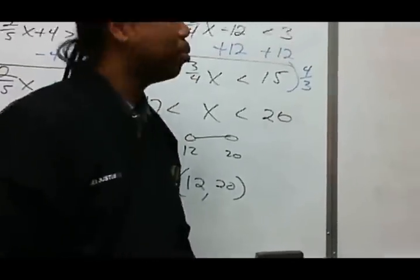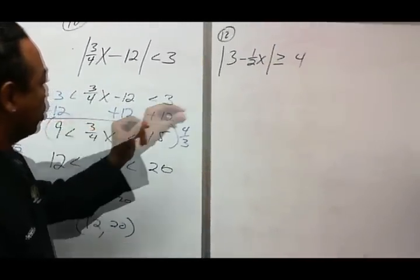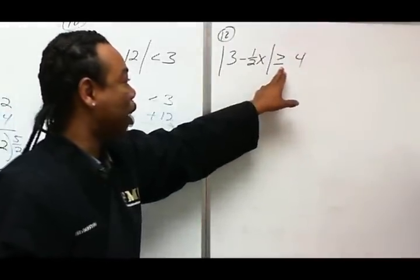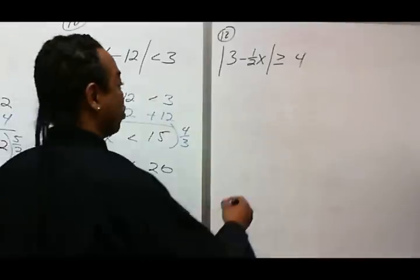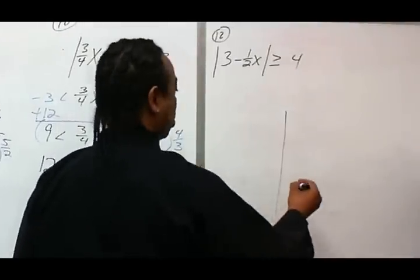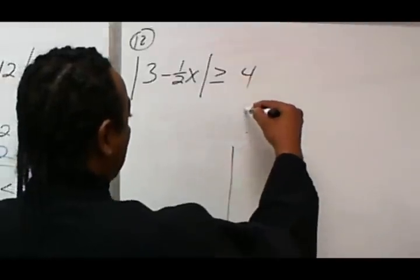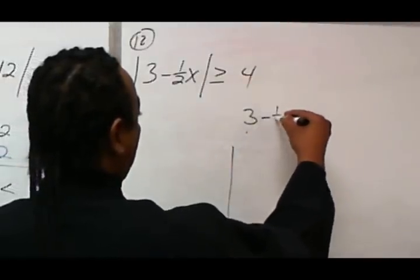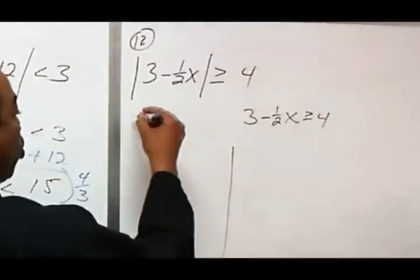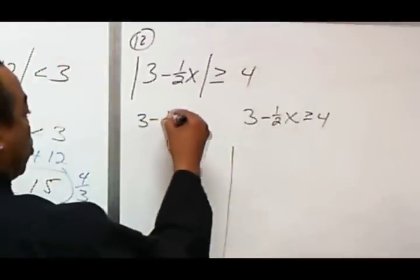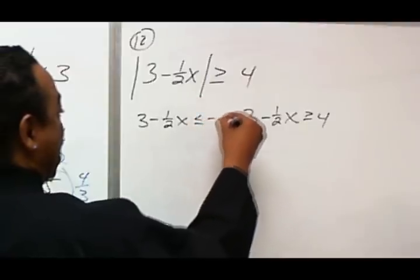Number 12. Since this is an absolute value followed by a greater than sign, I'm going to split this into two pieces — a left and right side. On the right side, everything remains and we just remove the absolute values. So we have 3 minus 1/2x greater than or equal to 4. On the left side, we remove the absolute values and change the signs to less than and negative 4.